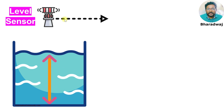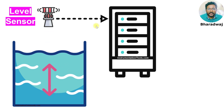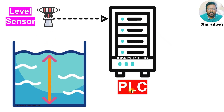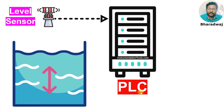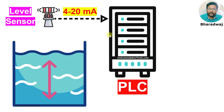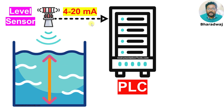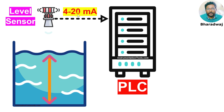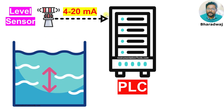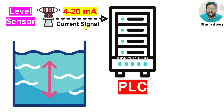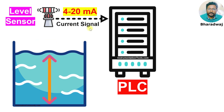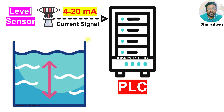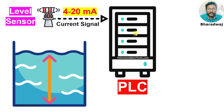This level sensor sends this signal to the PLC, Programmable Logic Controller. The output is in the form of 4 to 20 mA. It is a current signal. This level sensor is an analog input to the PLC.